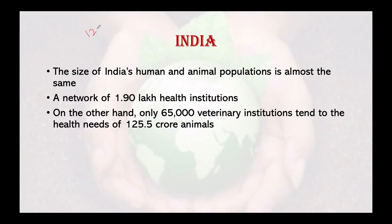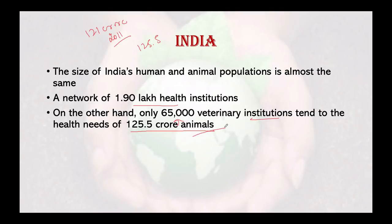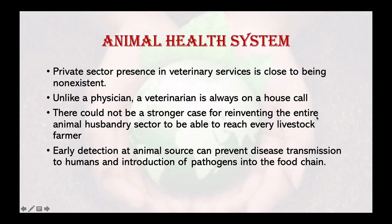The size of India's human and animal population is almost the same: 121 crore people according to the 2011 census, and 125.5 crore livestock and poultry. A network of 1.90 lakh health institutions in the government sector forms the backbone of health governance, supported by large private facilities. To treat 125.5 crore animals, there are 65,000 veterinary institutions, including 28,000 mobile dispensaries and first-aid centers.